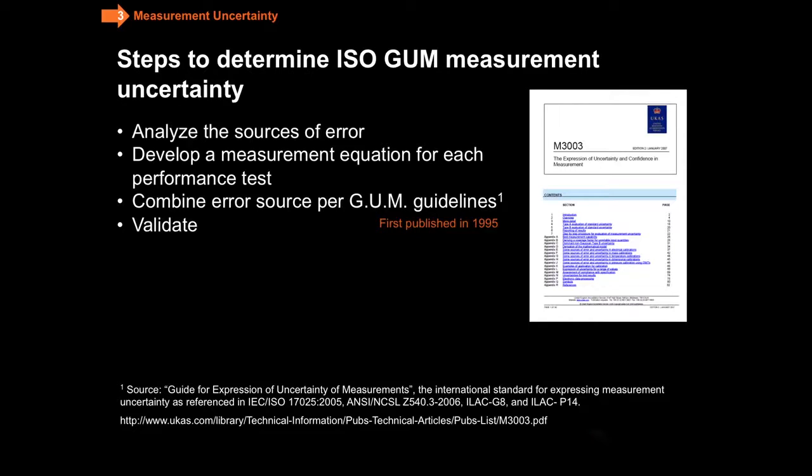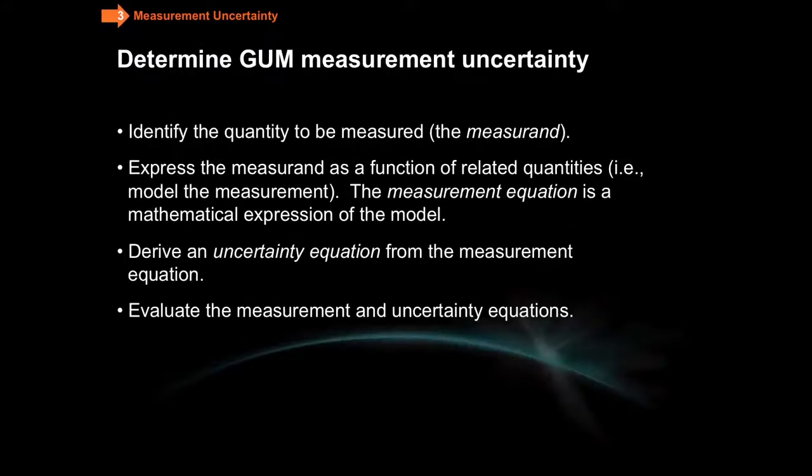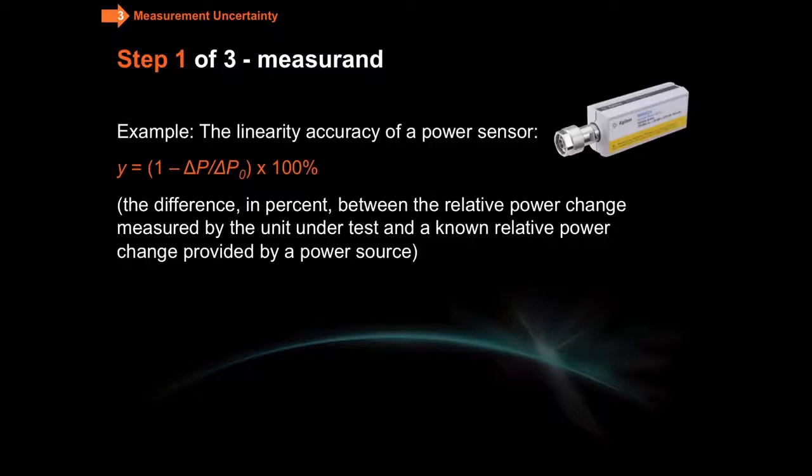If we dive in just a little bit more specifically, these would be the specific steps that you would take. We're going to take a power sensor, and we're going to take a fairly common measurement. Most power sensors have a linearity specification. The definition of power linearity is really just the difference in percent between a relative change of a known change by a reference power source and the amount that you measure with the power sensor itself.